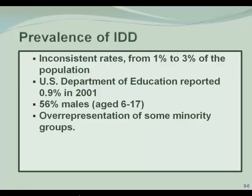As you can see, there are some inconsistencies in the prevalence reports. We do know there are more males than females. We do know that there is an over-representation of African Americans, Hispanic Americans, and Native Americans in the IDD category.